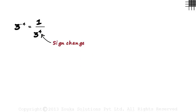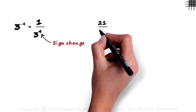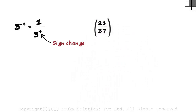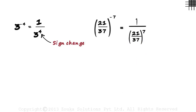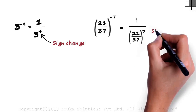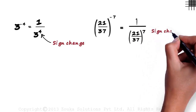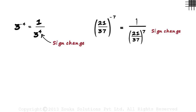Now consider 21 by 37, the whole raised to minus 7. To write it down as a positive exponent, we write it as 1 divided by 21 by 37, the whole raised to 7. Again, we just change the sign of the exponent and wrote it under 1.